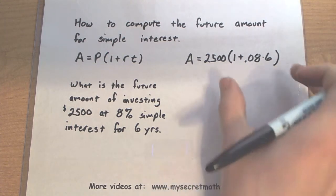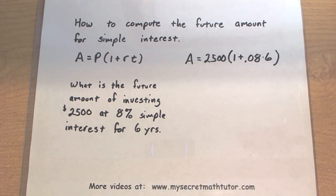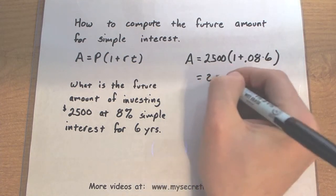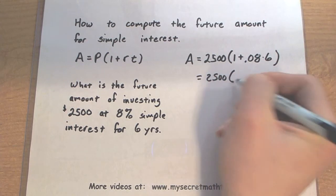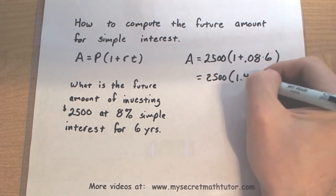As you go to multiply this together, it's probably best to take care of the part inside parentheses first. This will give you $2,500 multiplied by 1.48.